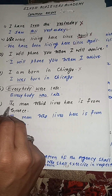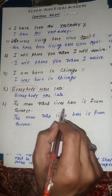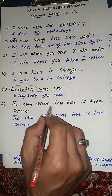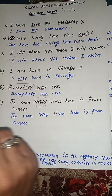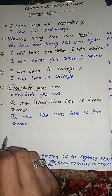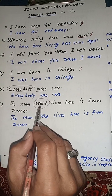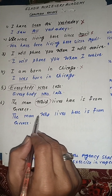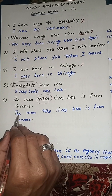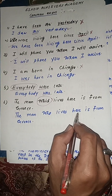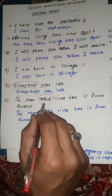Another example: 'The man which lives here is from Greece.' 'Which' is mostly used for non-living things. Since we are referring to a living person, we use 'who.' The correct sentence is: 'The man who lives here is from Greece.'